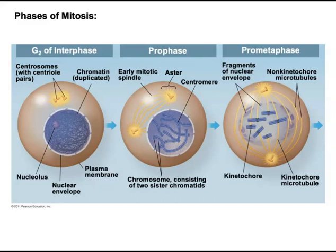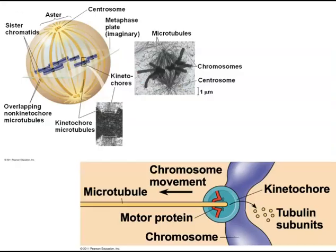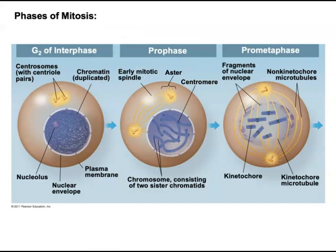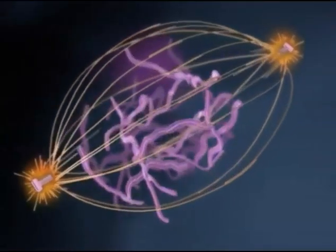The centrosomes have reached the opposite ends of the cell. A special structure called the kinetochore is a complex of proteins associated with the centromere of a chromosome during cell division, to which the microtubules of the spindle attach. The kinetochore facilitates movement of the chromosomes. In prometaphase, some mitotic spindle microtubules reach out from the centrioles to attach to the kinetochores of chromosomes, while other microtubules — called non-kinetochore microtubules — attach to opposite strands. The spindle microtubules attached to the chromosomes begin to move them inside the cell.